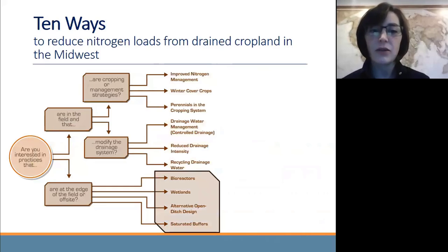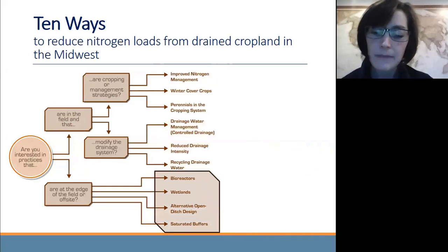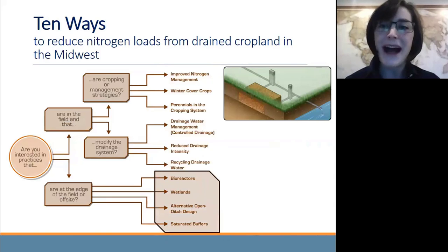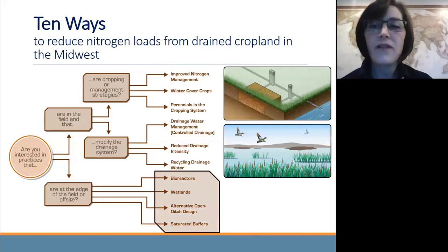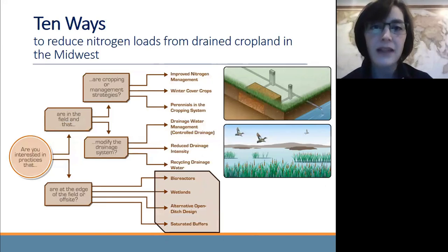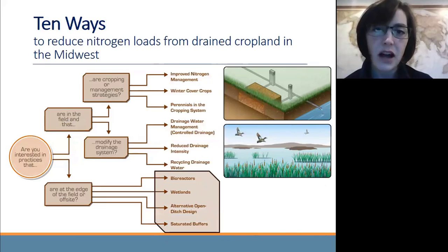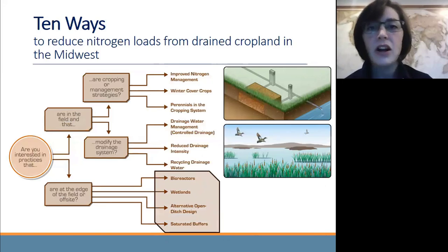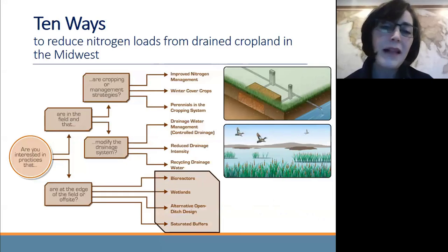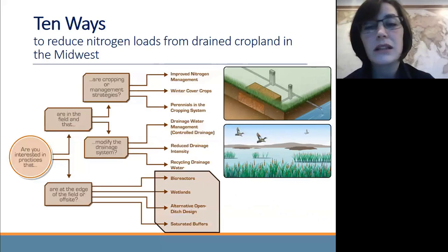The last subset of practices are the edge of field or off-site practices. Wetlands are one of our best edge of field practices. Constructed wetlands are dynamic systems of plants, soil, water, and bacteria that all work together to clean nitrogen out of tile drainage water. In addition to this water cleaning benefit, they provide wildlife habitat, carbon sequestration, and flood retention. The trick with wetlands is that they might require land to be taken out of production, which is sometimes a hard sell for a lot of our producers.